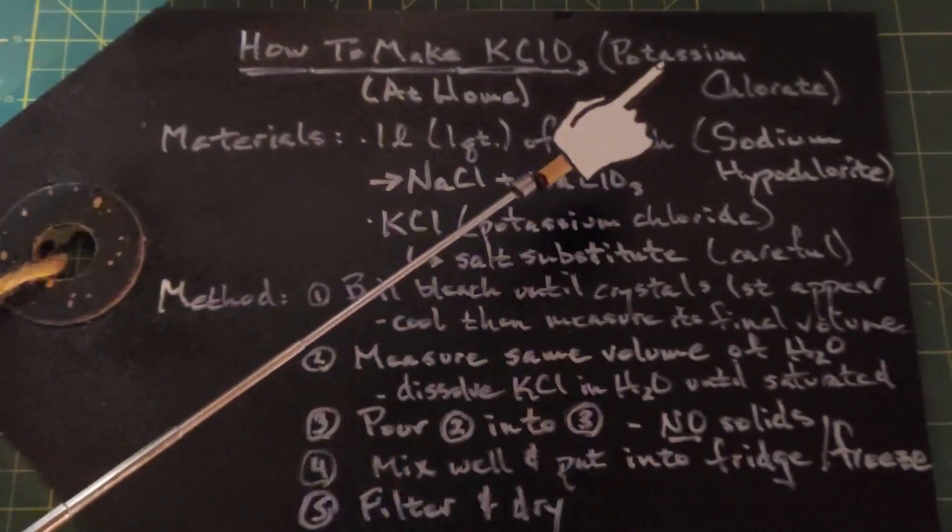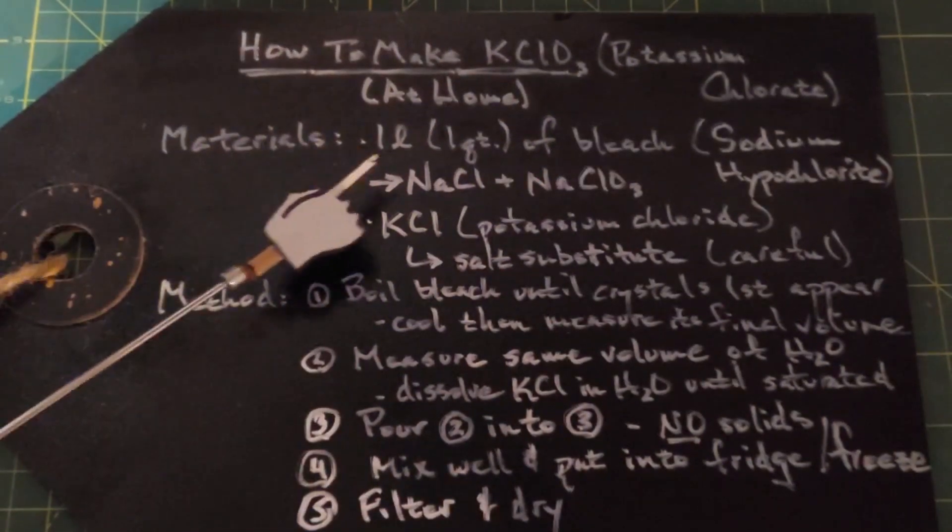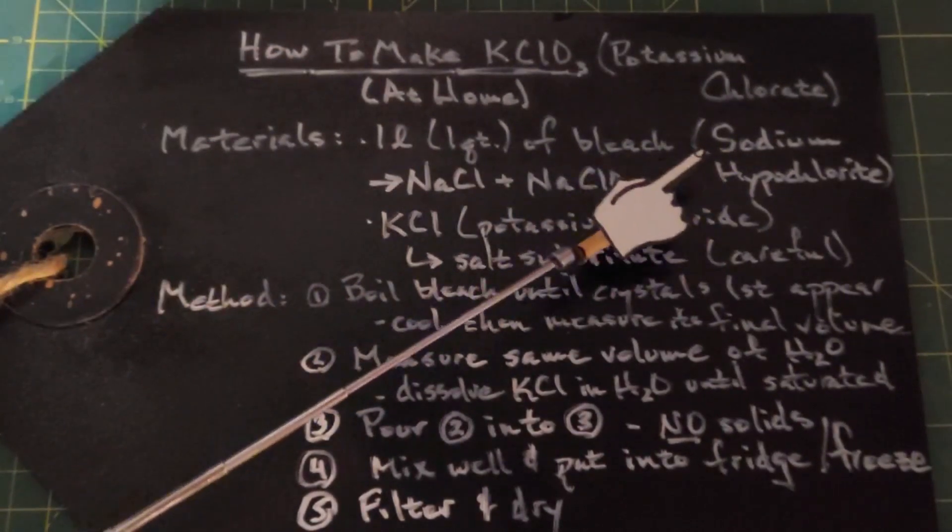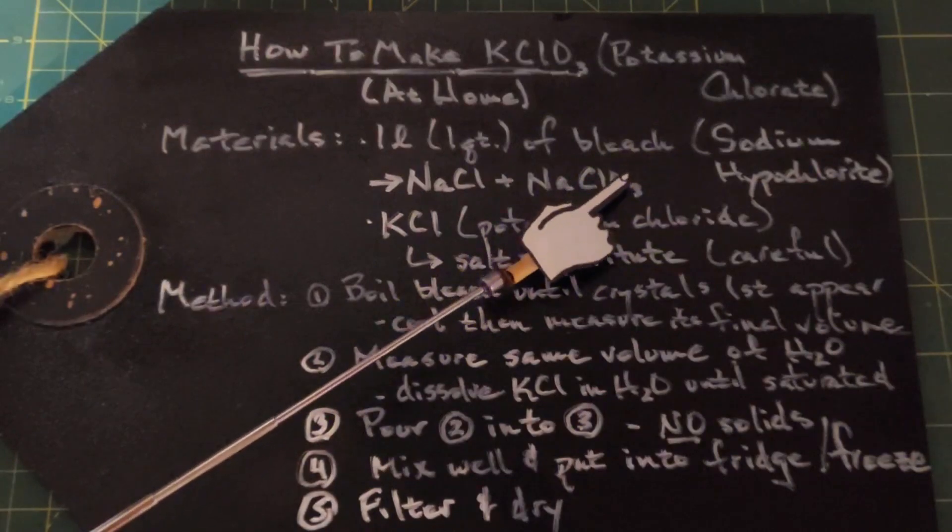The materials we need are one liter or a quart of regular bleach. Sodium hypochlorite is what it is, and don't use anything that's got splashless bleach or fragrance bleach. You want just plain old bleach.